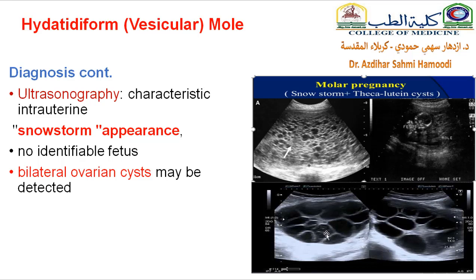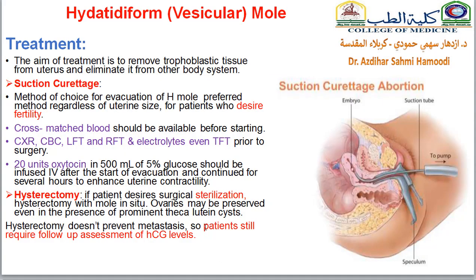If the patient has cystic formation in the ovaries, you will see large ovaries with theca lutein cysts. The aim of treatment is to remove the trophoblast tissue from the uterus and eliminate it from other parts of the body. The treatment of choice is suction curettage, especially when the patient desires fertility and still wants to be pregnant in the future. Medical treatment is contraindicated in molar pregnancy. Before the operation, you will prepare cross-matched blood and perform all investigations: chest X-ray, complete blood count, liver function, renal function tests, electrolytes, and thyroid function test. You will also prepare 20 units of oxytocin in infusion during and after the operation to enhance uterine contractility and prevent bleeding.